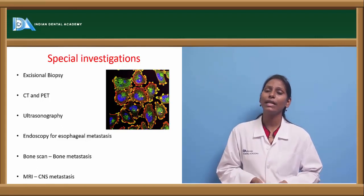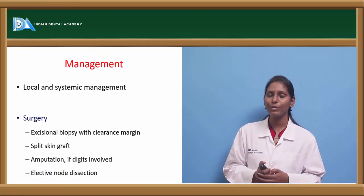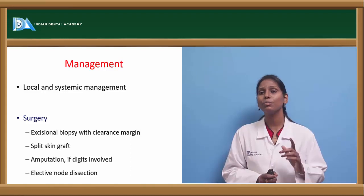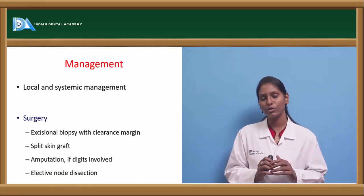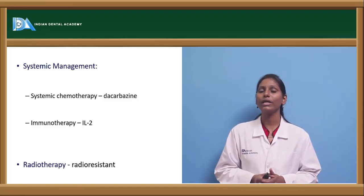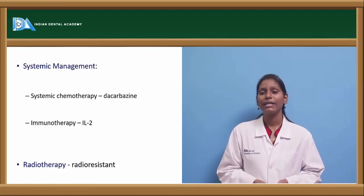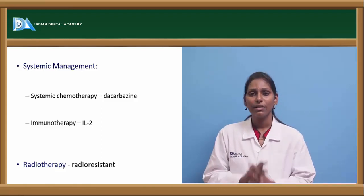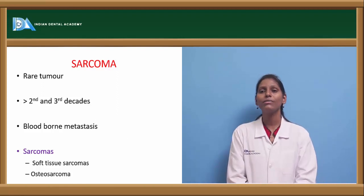Management: local management — excisional biopsy with 2 cm clearance margin to prevent recurrence. Split skin graft if needed. If digits are involved, amputate. Elective node resection when lymph nodes are involved. Systemic treatment — chemotherapy with dacarbazine can be given. Immunotherapy with interleukin-2 is useful. Remember: malignant melanomas are radio-resistant — radiotherapy is not indicated.